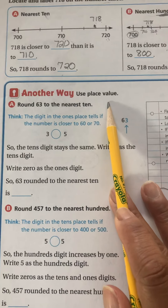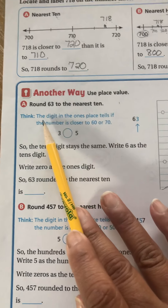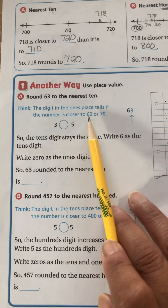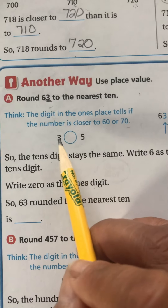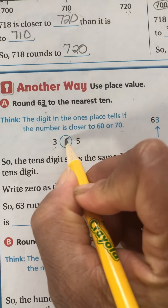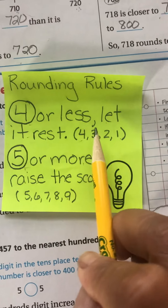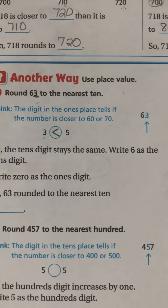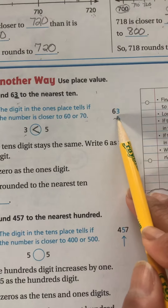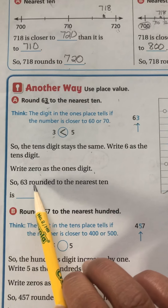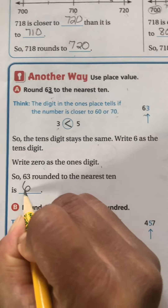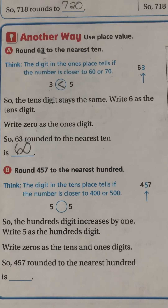Now a number line was one way they showed you. Here is another way — you can use place value. It says round 63 to the nearest 10. Think: the digit in the one's place tells if the number is closer to 60 or 70. So we look at the number 3 — is 3 greater than, less than, or equal to 5? It is less than 5. So remember our rule: 4 or less, let it rest. 63 is a low number because the 3 is low, so the 10's digit stays the same. Write the 6 as the 10's digit, write 0 as the 1's digit. So 63 rounded to the nearest 10 is 60.